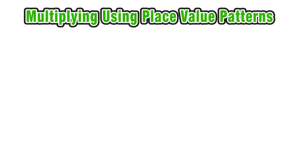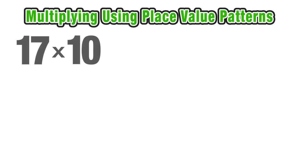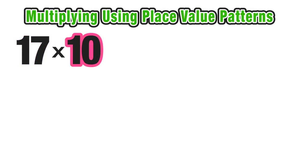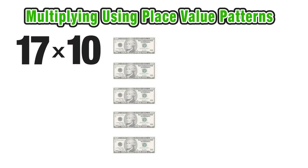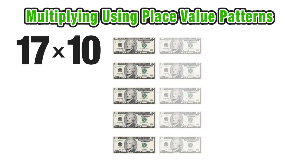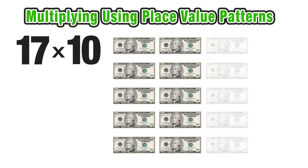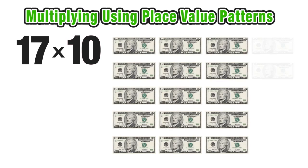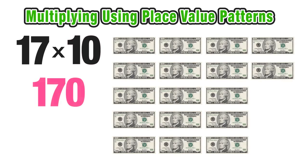Let's start our first example where we want to multiply 17 times 10. We can think of this as laying out 17 ten-dollar bills and figuring out how much money that would be. So 17 tens would equal 170.